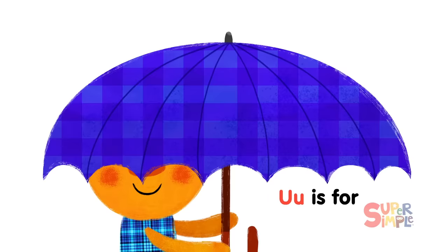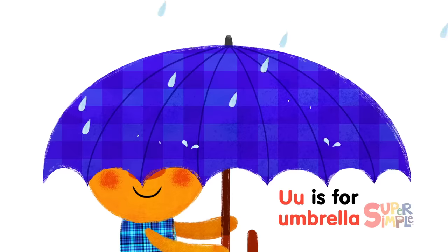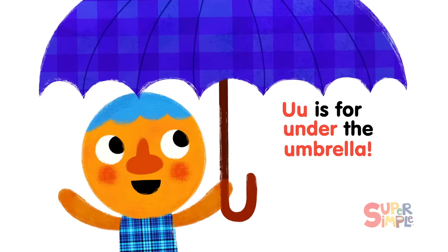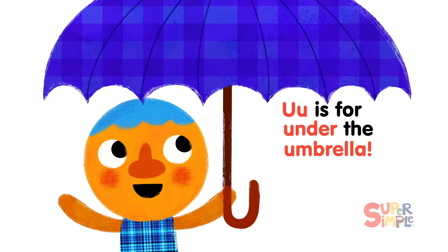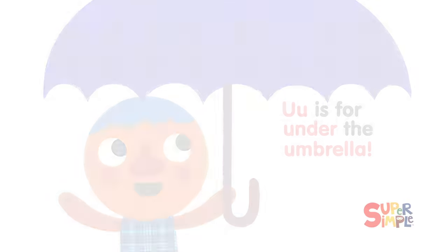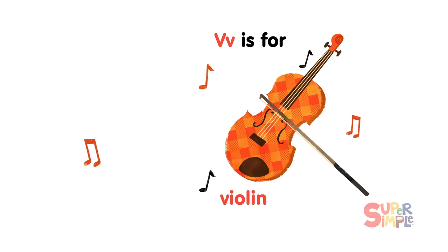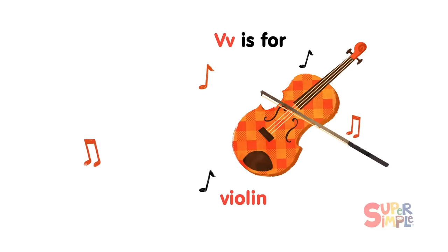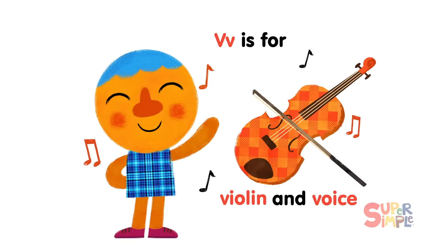U is for Umbrella, Under the Umbrella. V is for Violin and Voice.